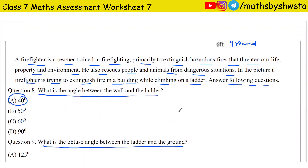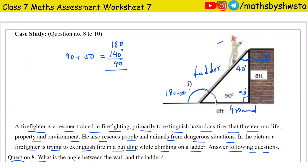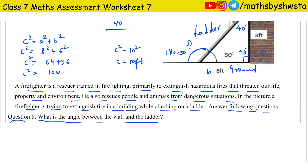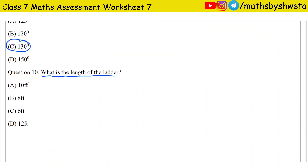Question 10: What is the length of the ladder? Using the Pythagorean theorem, c² equals a² plus b². Taking the wall as a equals 8 feet and the ground as b equals 6 feet: 8² plus 6² equals 64 plus 36, so c² equals 100. The square root of 100 is 10, so the length of the ladder is 10 feet.